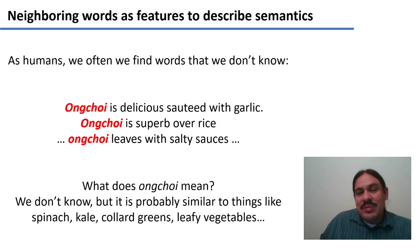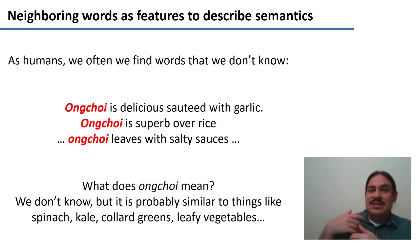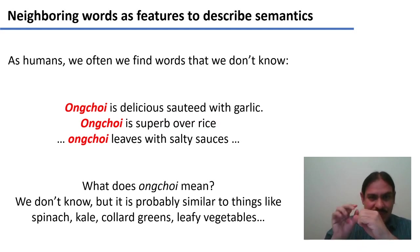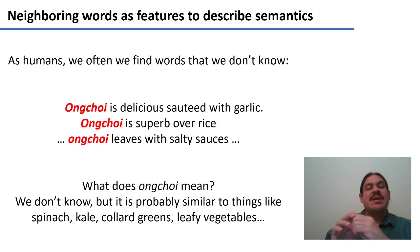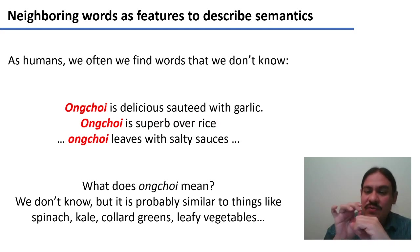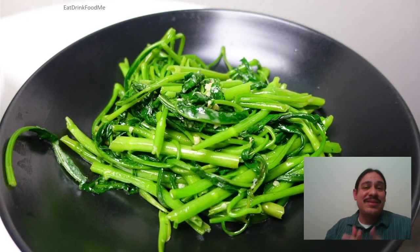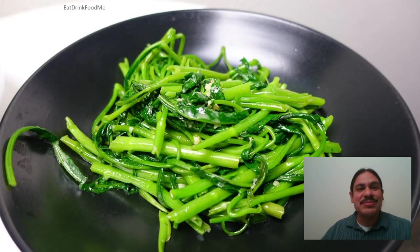We don't really know what it means, but we assume that it's something similar to spinach, to kale, to leafy vegetables in general, because the word Ong Choy appears with garlic, with rice, with leaves — and this is something that the word spinach also does. The word spinach frequently occurs with words like garlic, rice, and leaves. Indeed, this is an Ong Choy, also known as water spinach or morning glory. It's absolutely delicious.